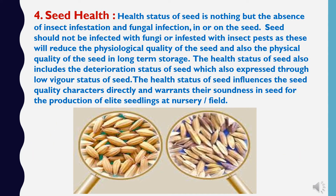The fourth seed quality is seed health. Health status of seed is the absence of insect infestation and microbial infection in or on the seed. Seed should not be infected with fungi or infested with insect pests, as these will reduce the physiological quality and physical quality of seed in long-term storage. The health status of seed also includes the deterioration status of seed, which is expressed through low vigor status. Health status of seed influences the seed quality characters directly and warrants their soundness for the production of elite seedlings at nursery or field.